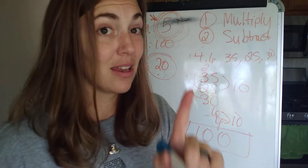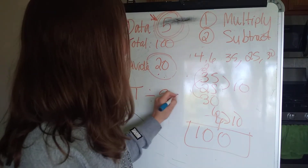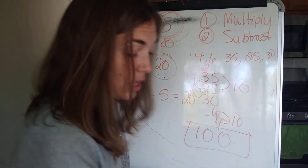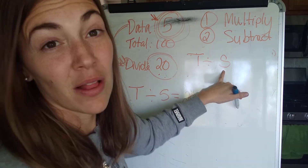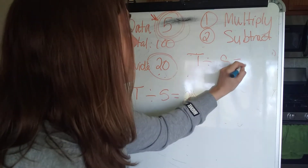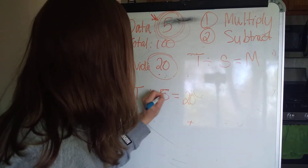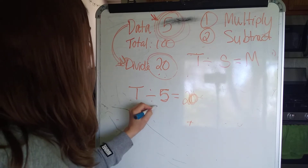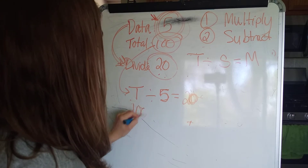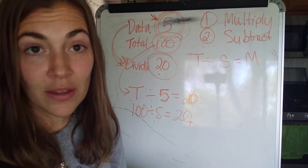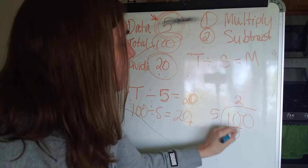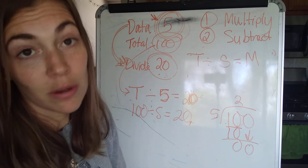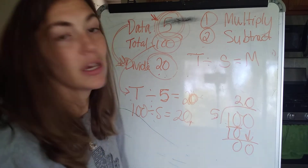If you really want to double check, we made that equation: total divided by five equals twenty — or in variables, total divided by data set equals mean. One hundred divided by five equals twenty. Five goes into ten two times, subtract, bring down your zero — don't say remainder zero, bring it down — and five goes into zero zero times. So I get twenty.